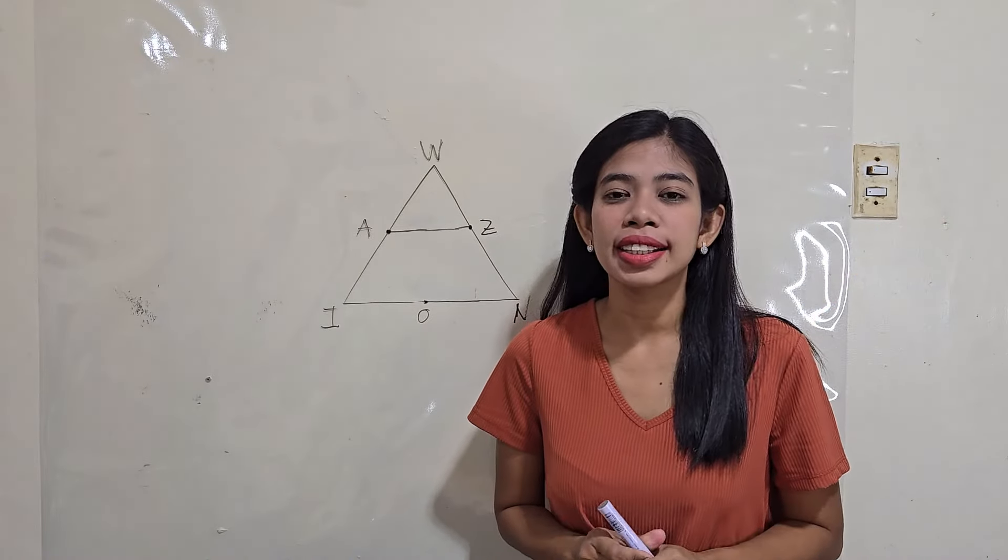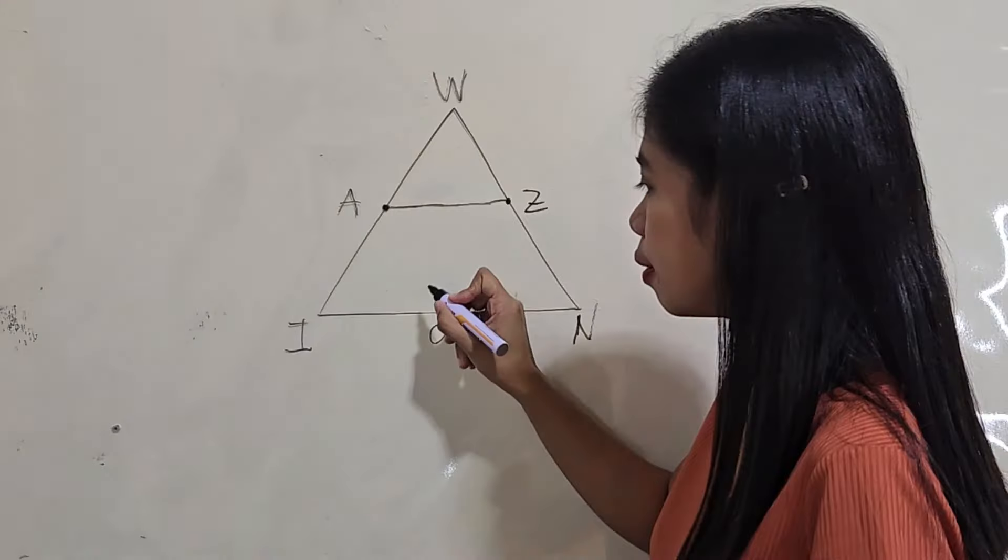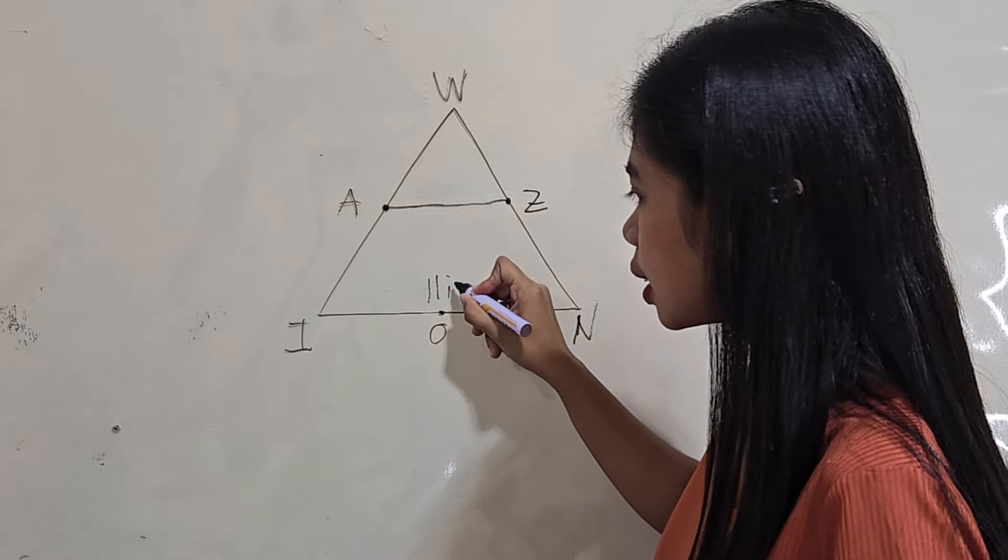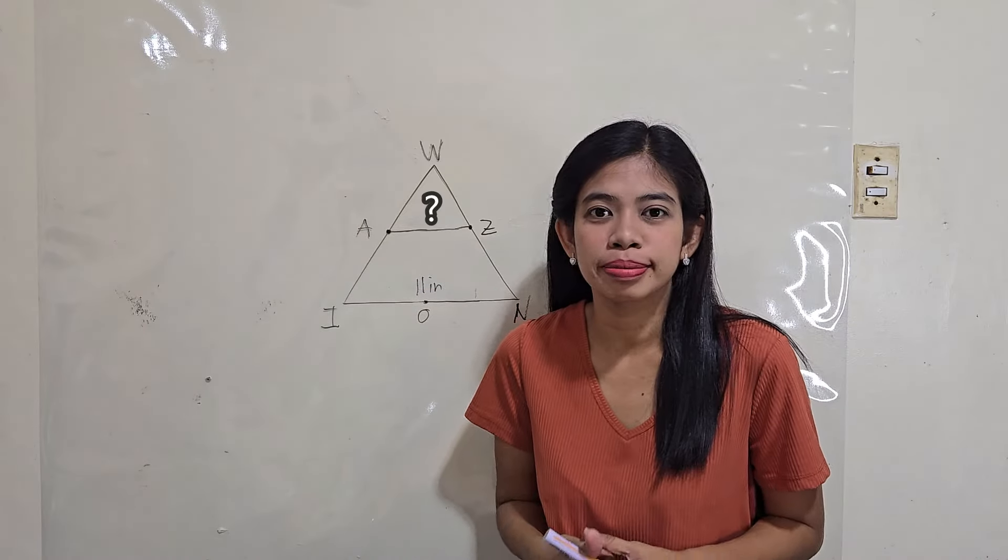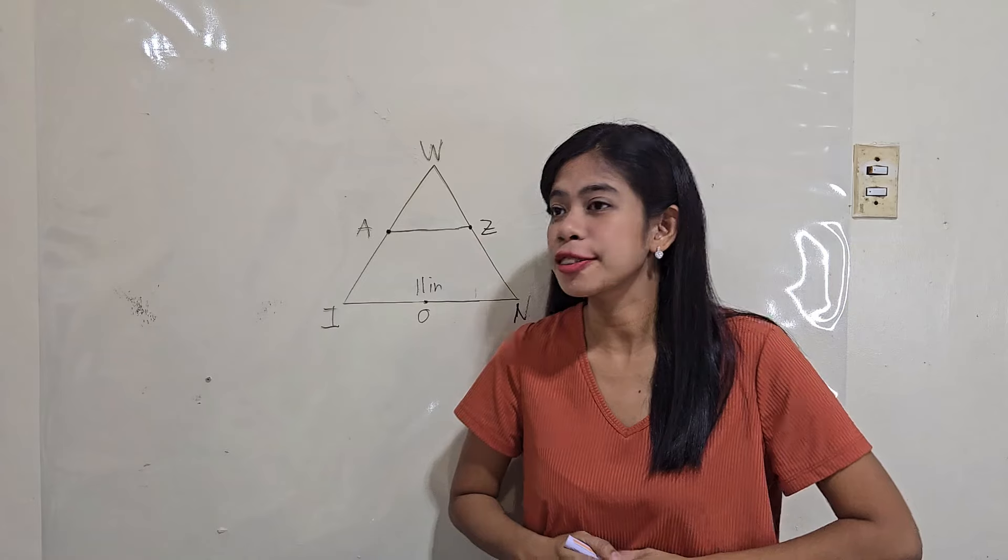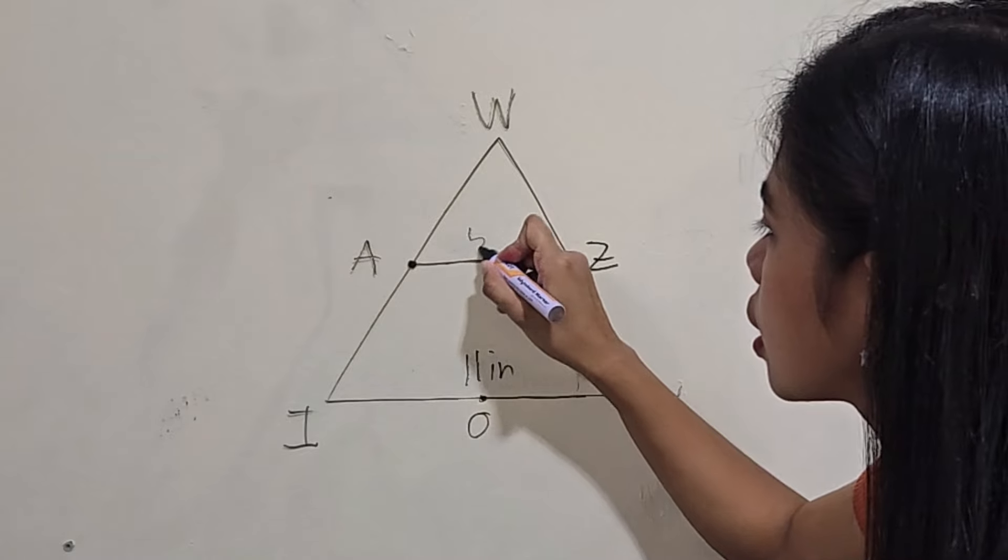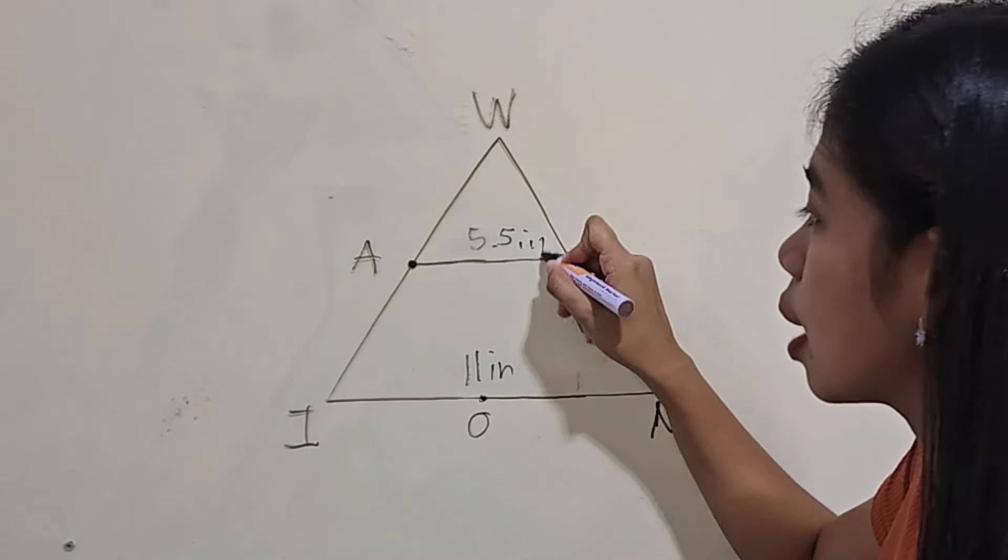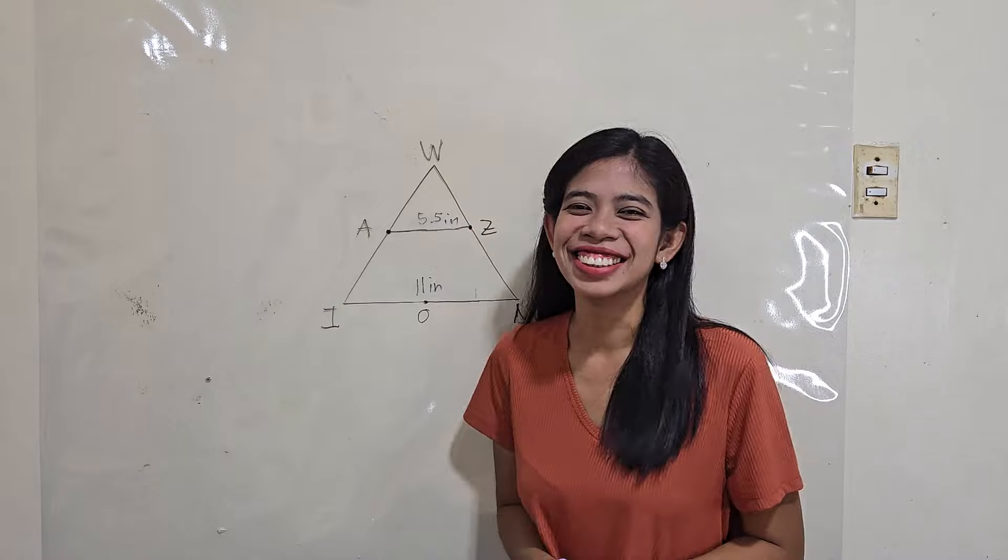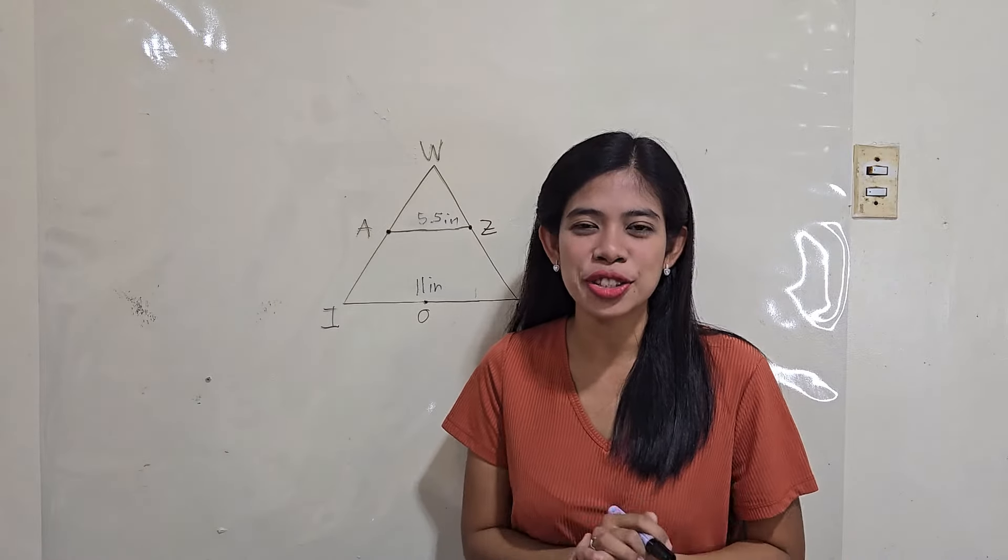Now, suppose I say that the measure of the third side is 11 inches. What's the measure of the midline? Correct, that's 5.5 inches. Once again, you just have to get the half of the third side. And that's it. That's the measure of the midline.